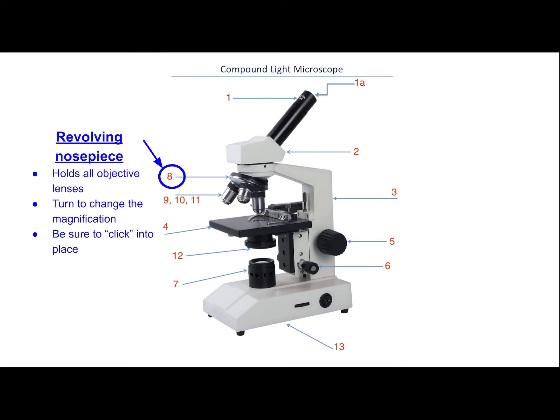Number eight is the revolving nosepiece. This holds all three of the objective lenses. You turn this to change the magnification. Make sure when you turn it that you feel the little click to ensure the lens is completely straight and in place.